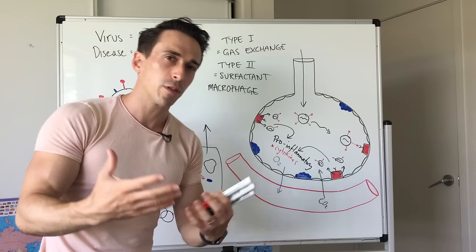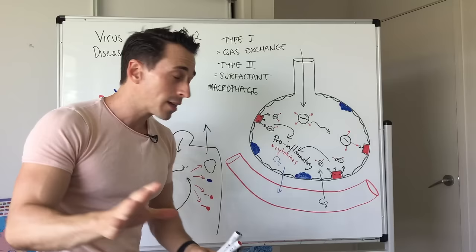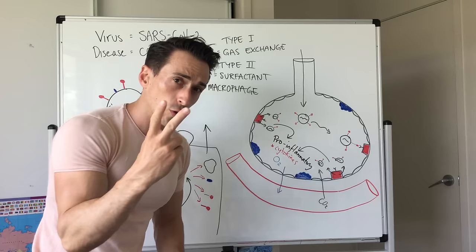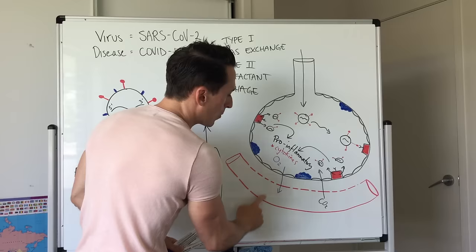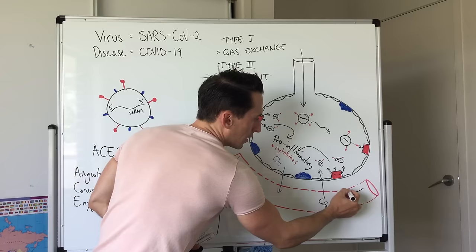Because it's inflammation, you have redness, you have pain, you have swelling. One of the things that happens is the blood that goes past these alveoli, cytokines tell it to do two things. It tells it to put a whole bunch of holes in it so it becomes more permeable or porous.